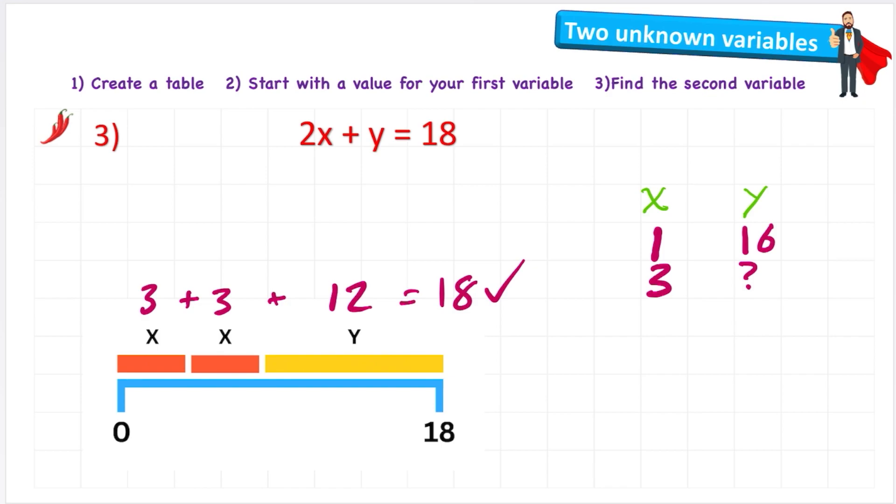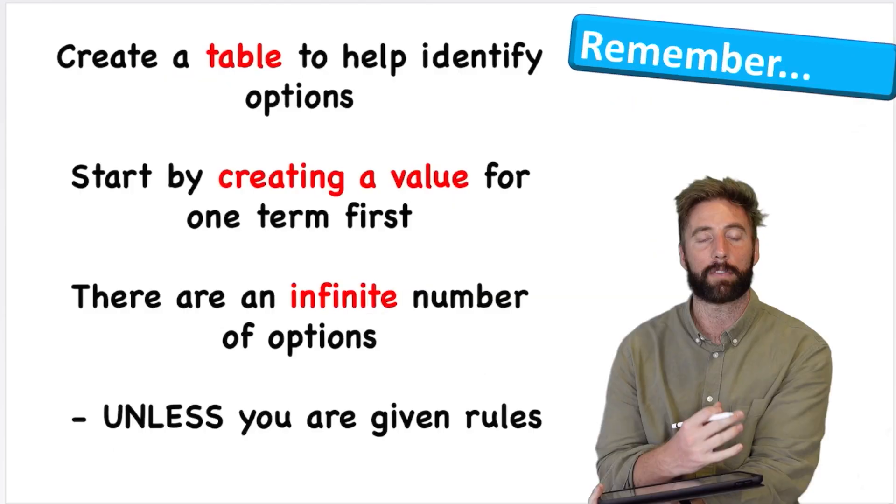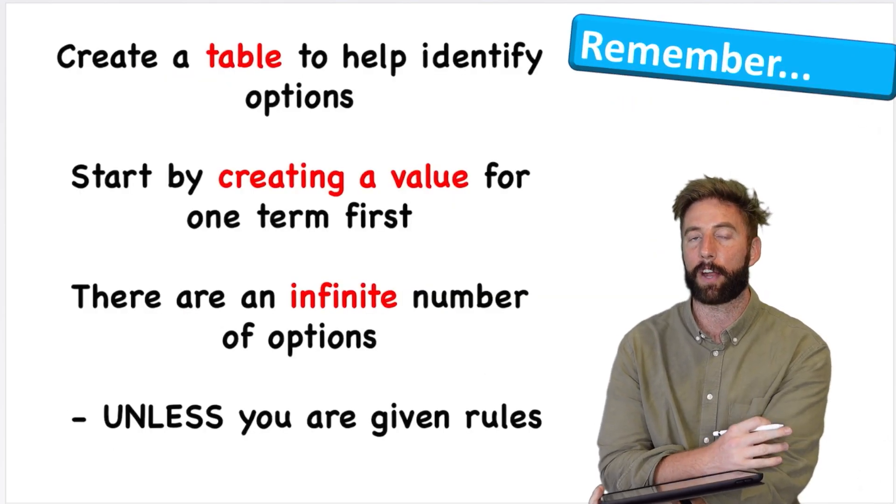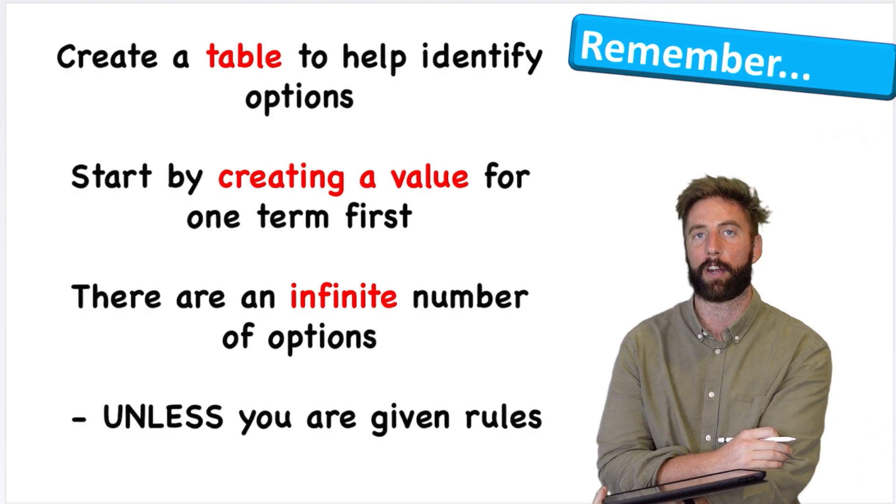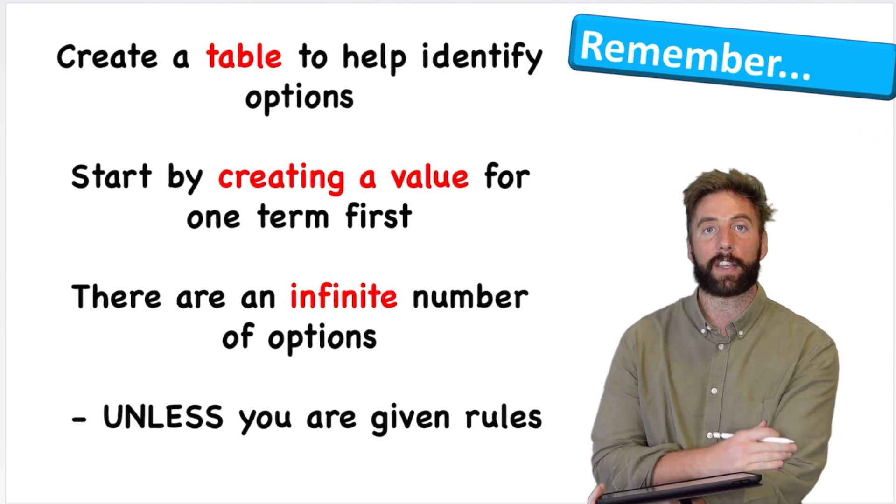And again, for this example there would be infinite possibilities that could be used as variables. So there you go. That is how to find the value of variables when we have two unknown variables in an equation. Let's look at things to remember.